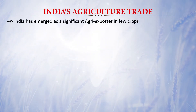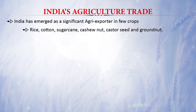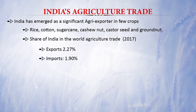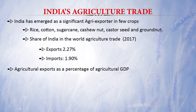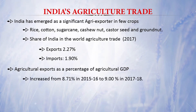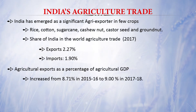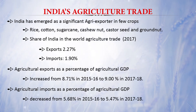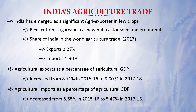India has emerged as a significant exporter of crops like rice, cotton, sugarcane, cashew nut, castor seed, and groundnut. India's share of world trade is about 2.27 percent for exports and 1.9 percent for imports in 2017. Agriculture exports as a percentage of agriculture GDP increased from 8.71 percent in 2015-16 to 9 percent in 2017-18, while agriculture import as a percentage of agriculture GDP decreased from 5.68 percent in 2015-16 to 5.47 percent in 2017-18, making India a net exporter of agricultural produce.